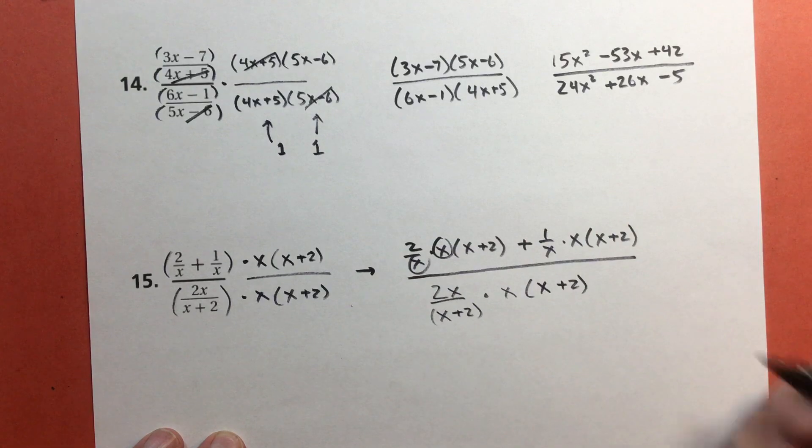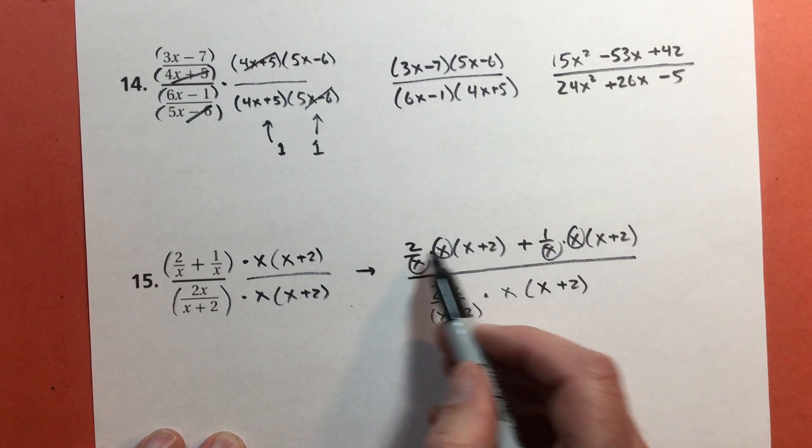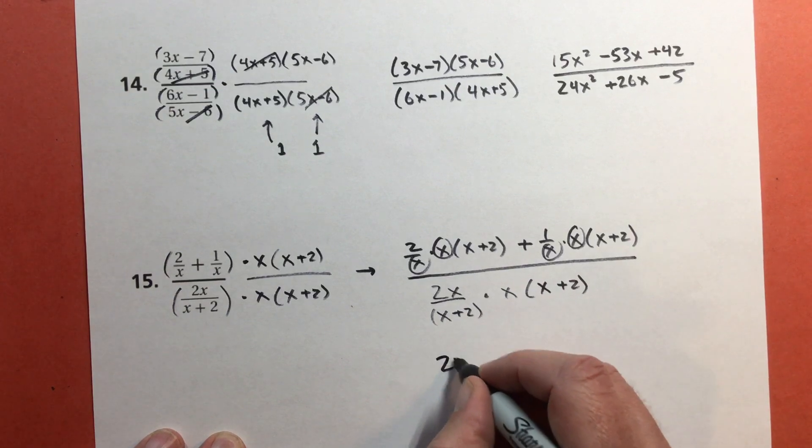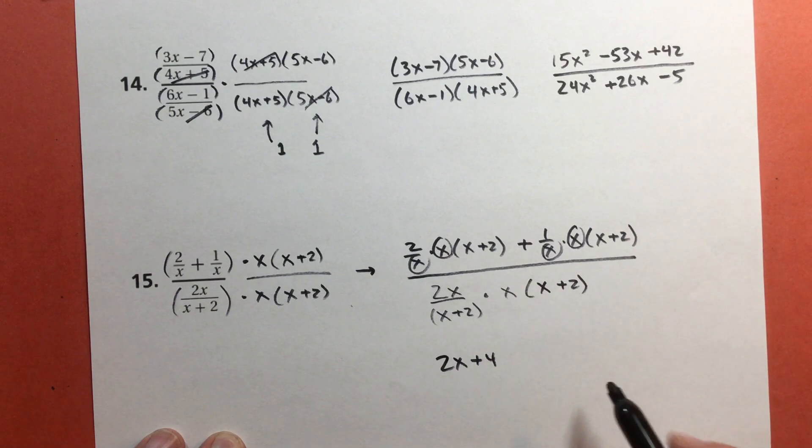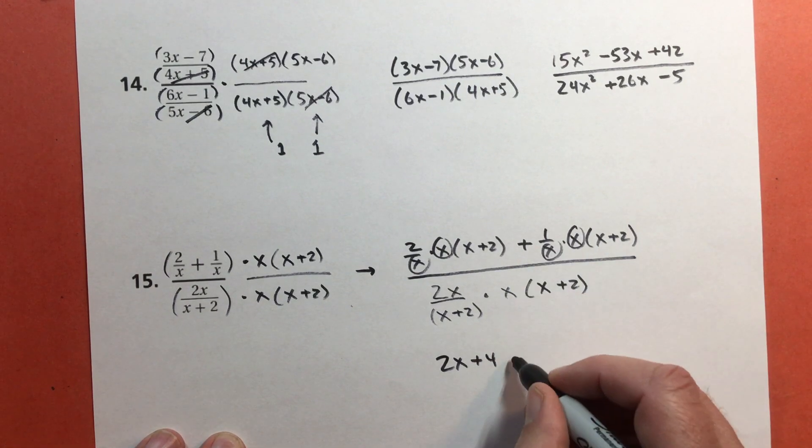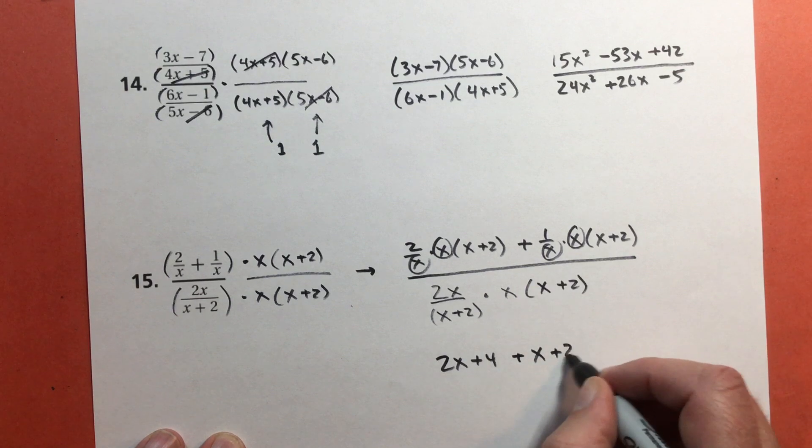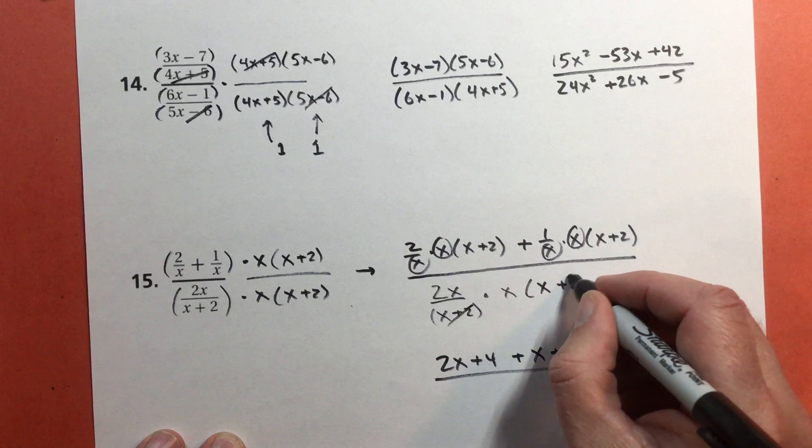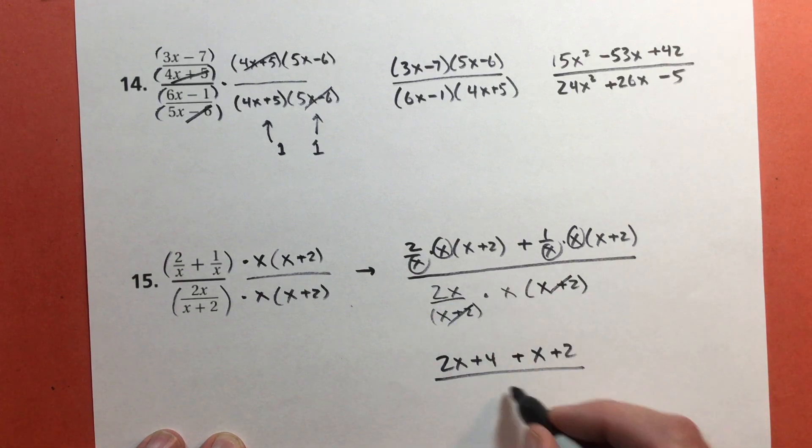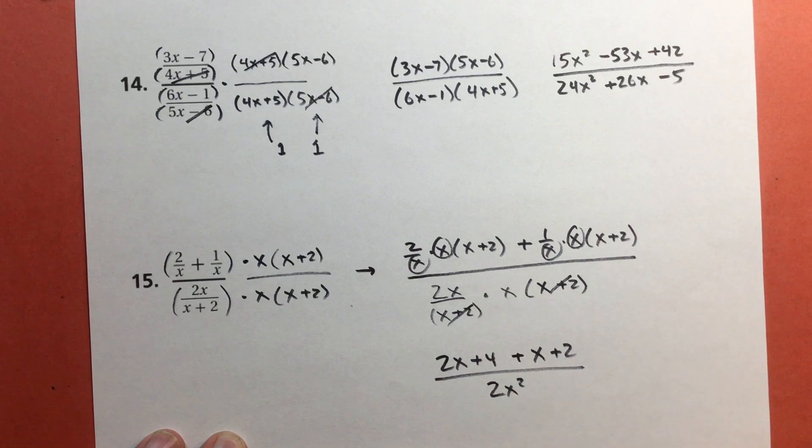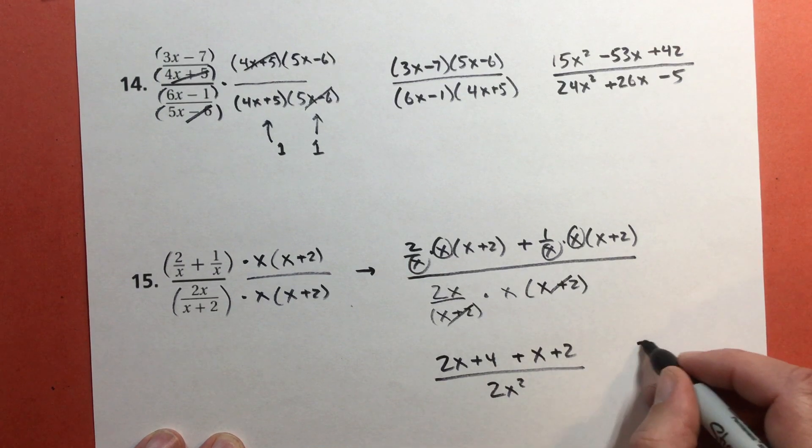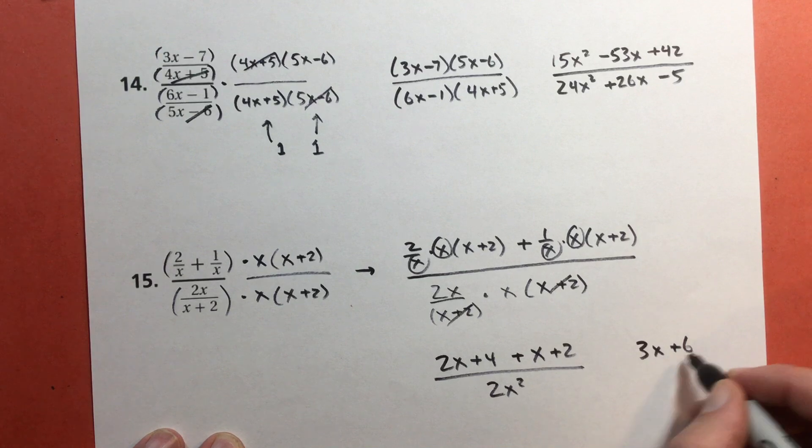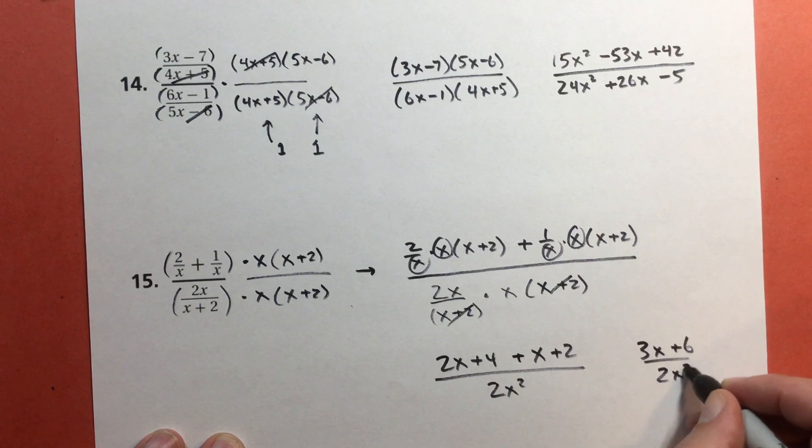Now I can start reducing stuff. The x's are going to reduce. The x's are going to reduce. So I get 2 times x, 2 times 2, 2x plus 4. I get 1 times x plus 2, which is x plus 2. The x subtract 2's are going to reduce, and I just get 2x times x, which is 2x squared. And if I take care of the top, I get 3x plus 6 over 2x squared.